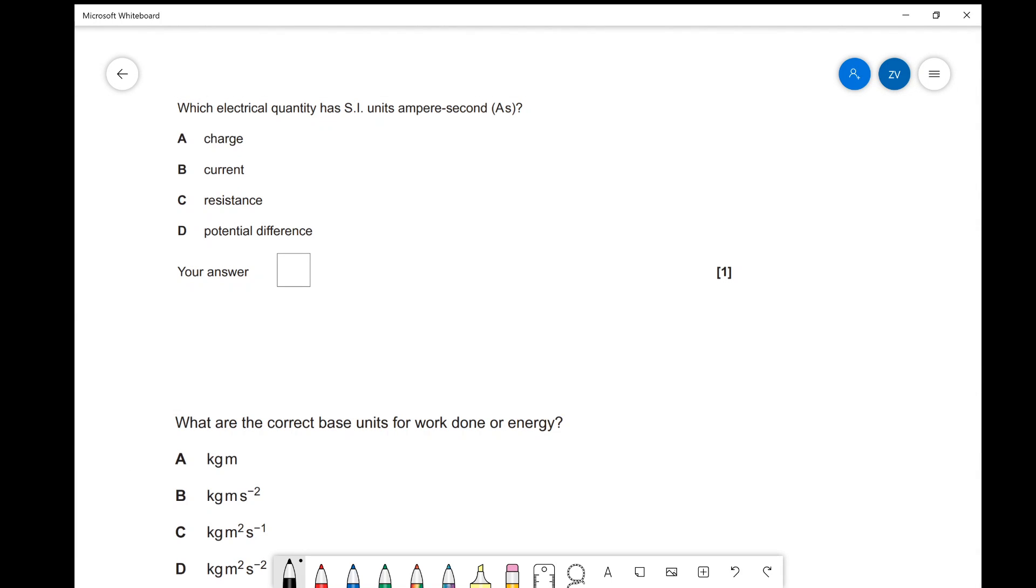Okay, next one. Which electrical quantity has the SI unit amp seconds or AS? Charge, current, resistance, potential difference. As always, the best thing to do would be to write some formulas beside those quantities. So for the first one, we know that the formula for charge is Q equals I times T.